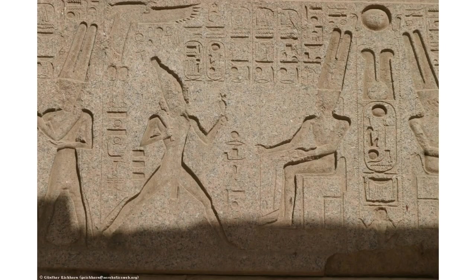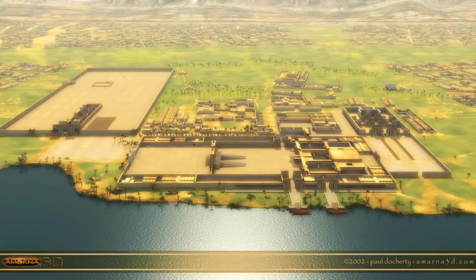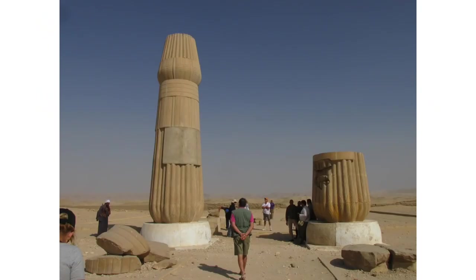His history was erased — or they tried to erase his history — because he moved the capital from Thebes to his new place called Amarna, or Akhetaten. This is what it looks like today. It was completely obliterated after he was murdered. All that remains are these pillars, which are made of fiberglass.